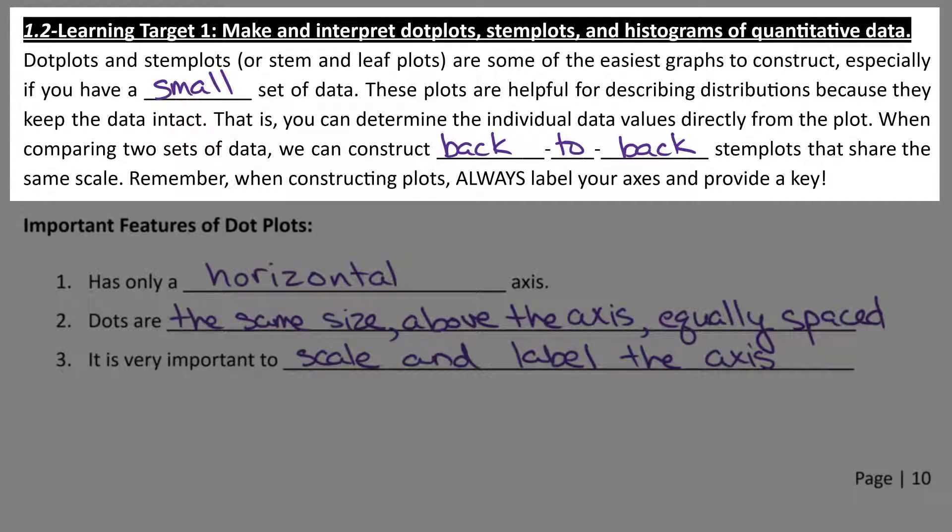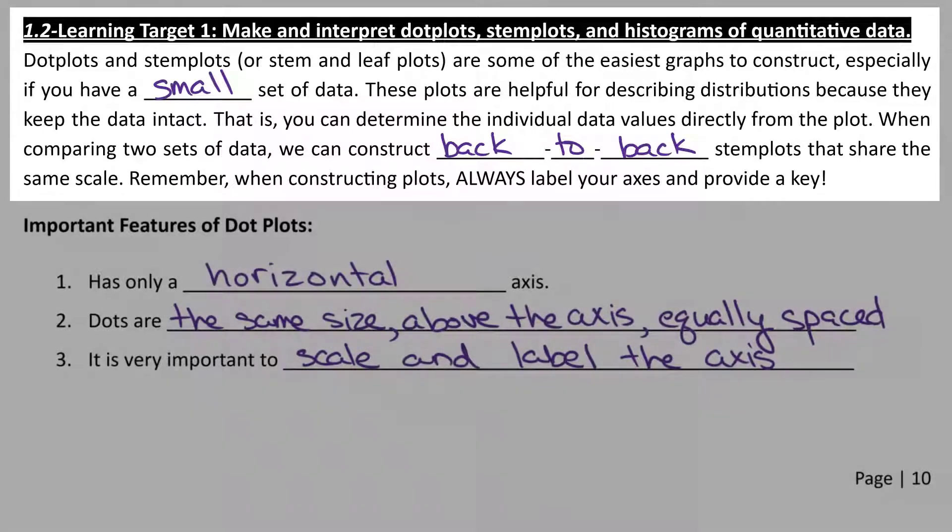We'll also get into box plots later. But today, we're only focusing on dot plots. Dot plots are especially good if you have a small set of data. They're going to be the quickest and easiest type of graph to do by hand.